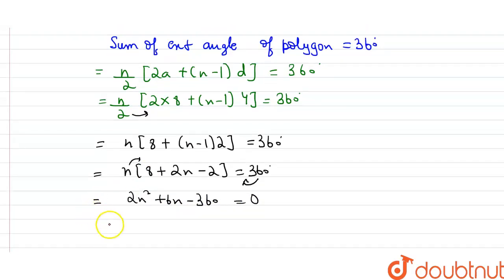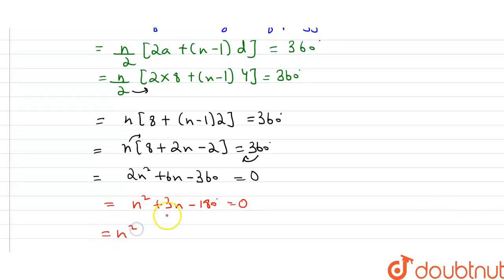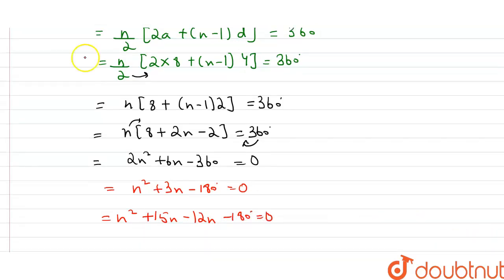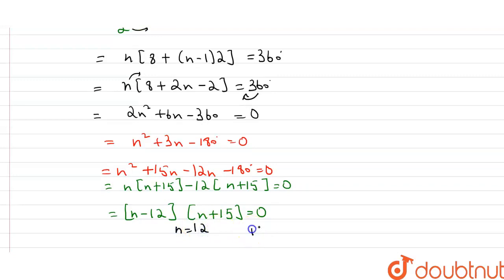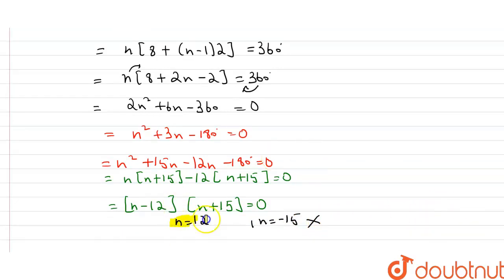Dividing the whole equation by 2: n² + 3n − 180 = 0. We can factor this as n² + 15n − 12n − 180 = 0, giving n(n + 15) − 12(n + 15) = 0, so (n − 12)(n + 15) = 0. Therefore n = 12 or n = −15. Since n cannot be negative, the number of sides is 12.